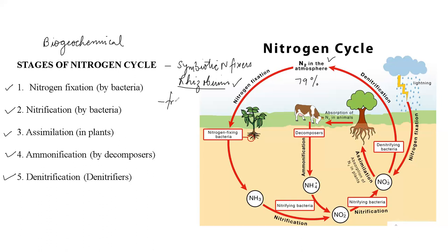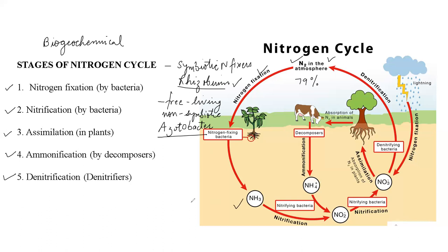The other types of nitrogen fixers are the non-symbiotic ones, known as free-living nitrogen fixers. These bacteria do not have any mutual partnership with plants — they freely live inside soil systems. However, they still help in the fixation of nitrogen by converting it into an accessible form so that plants can take it up easily. An important example of this free-living non-symbiotic bacterium is Azotobacter. So in the first stage, atmospheric nitrogen is converted into ammonia by these two types of nitrogen fixers.